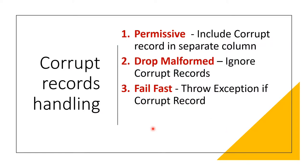We can handle corrupt records using the read option in Databricks while reading the input file. There are three different methods: permissive, drop malformed, and failfast. The permissive method will accept the corrupt record and mark it in a separate column, and the process will proceed further without any impact to the entire process.